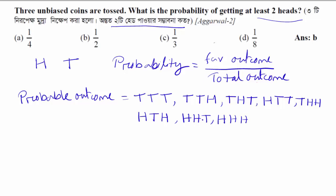What is the total outcome? How much is it? Counting: 1, 2, 3, 4, 5, 6, 7, 8. The total outcome is 8.